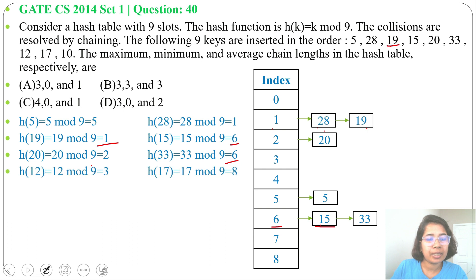Next 12, 12 divided by 9, remainder is 3. We'll insert 12 at index 3. Next, 17 divided by 9, remainder is 8. We'll insert 17 at index 8.